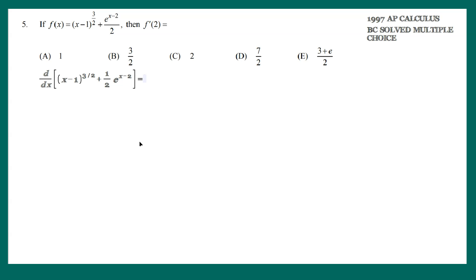When you differentiate, you can distribute the derivative operator to each piece individually. You're going to bring the 3 halves down, x minus 1 raised to the 3 halves minus 1. For the second piece, plus 1 half e raised to the x minus 2. You have to use the chain rule for the part that says e to the x minus 2, because x minus 2 is a function, that's the inside, and e is the outside.